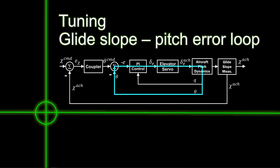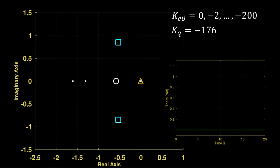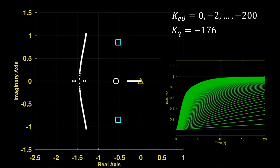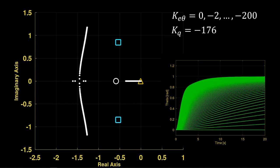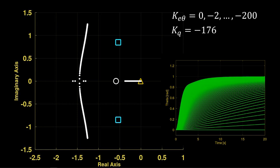Pitch error loop: holding the pitch rate gain at minus 176, we vary the pitch error proportional gain. As the pitch angle error gain becomes more negative, the pitch tracking pole at the origin moves leftward while the short period becomes less damped. The fast short period affects the step early on. As time increases, the short period decays and the pitch tracking pole dominates. This leads to a fast, then slow rate of tracking, and an apparent bend in the step response curve.